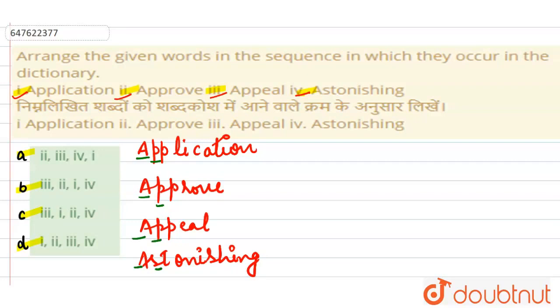P pehle aata hai, ya S pehle aata hai? Alphabet jab shuru karte hai A, B, C, D, E, is tarah se, toh P pehle aata hai.